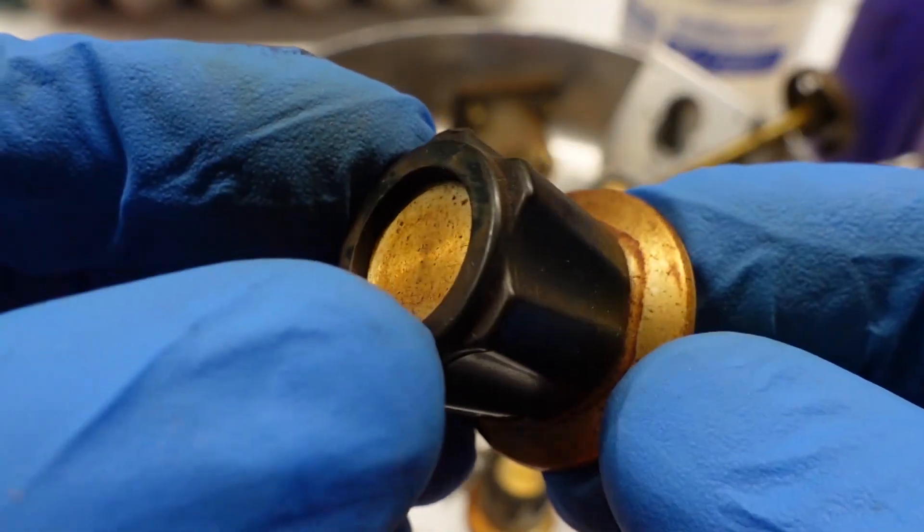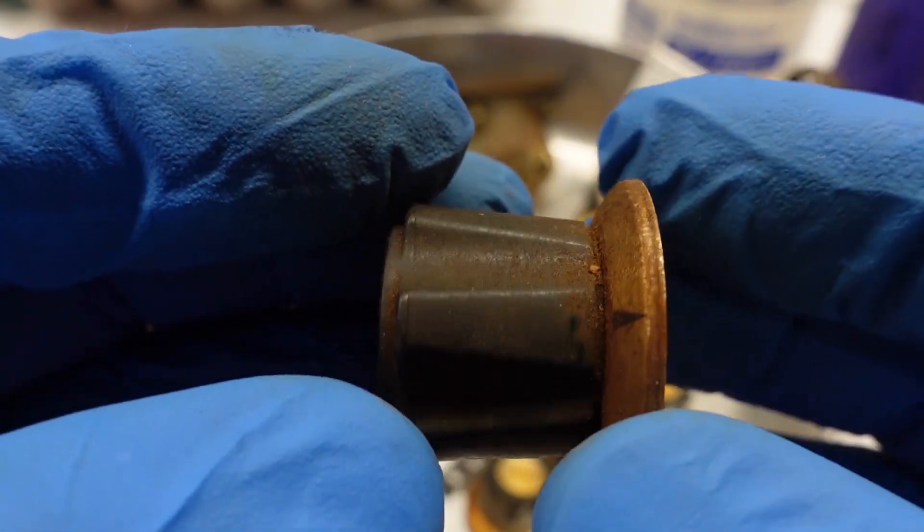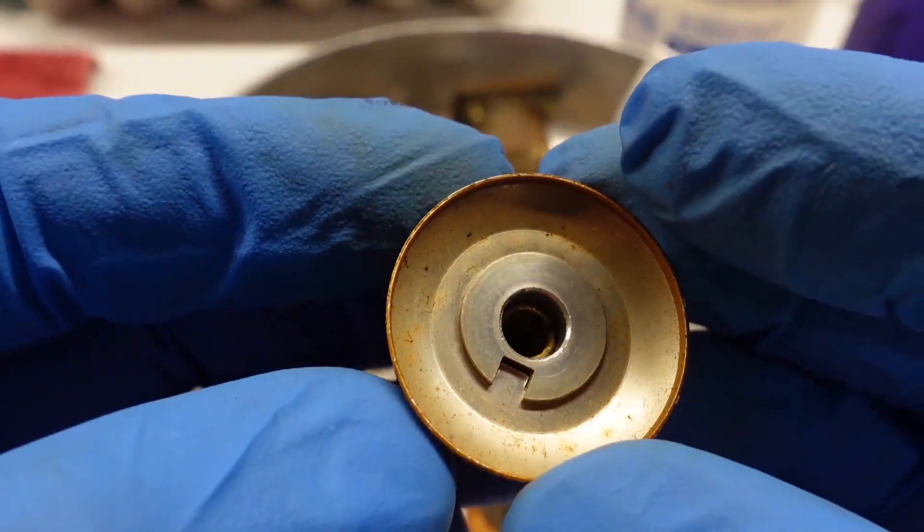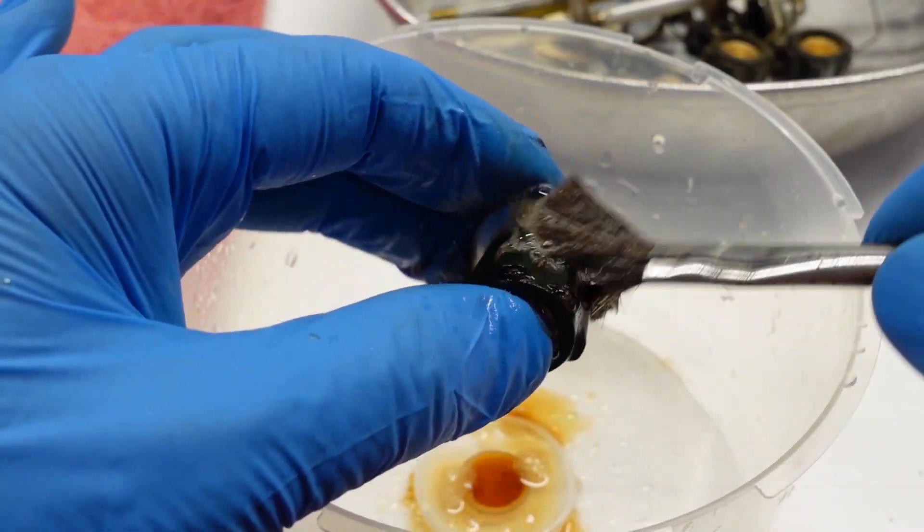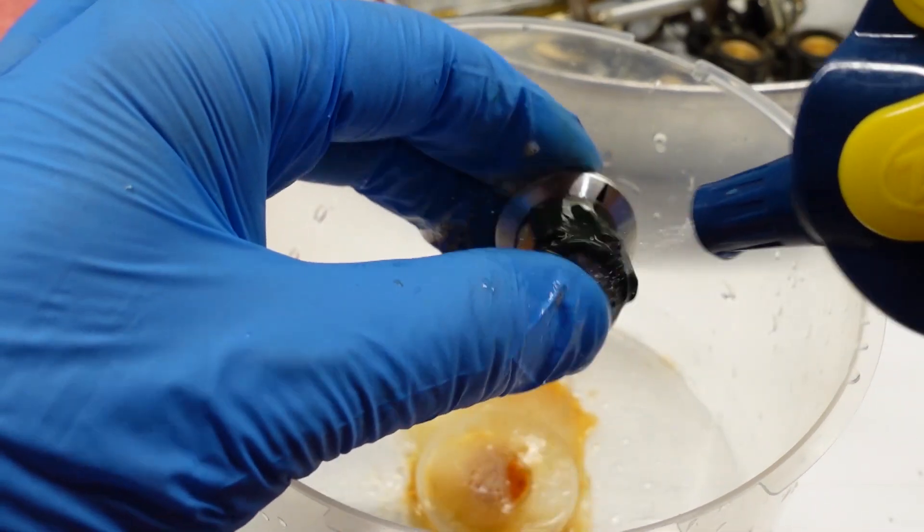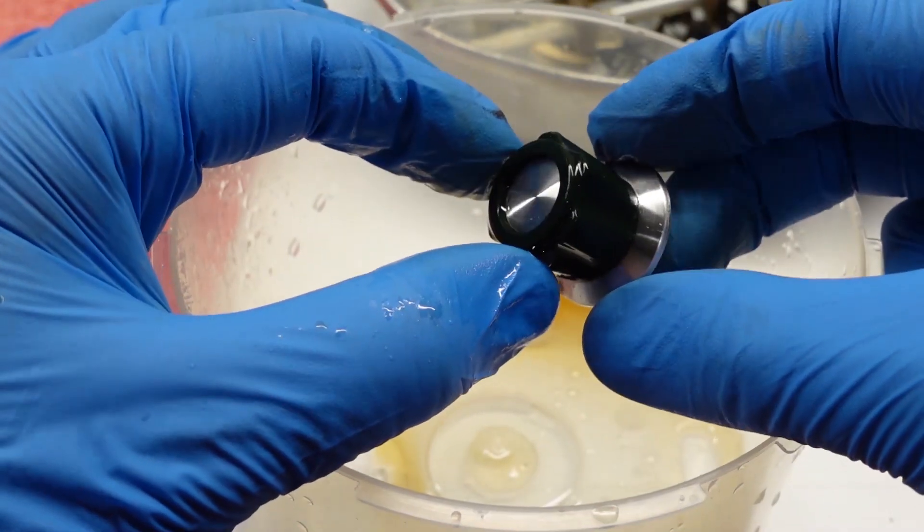The control knobs were a special level of grossness. The smoke accumulation on them was just nauseating. Once again, the super clean mixture went to work on it right away, and after a bit of light scrubbing with a flux brush and a water rinse, they perked right up.